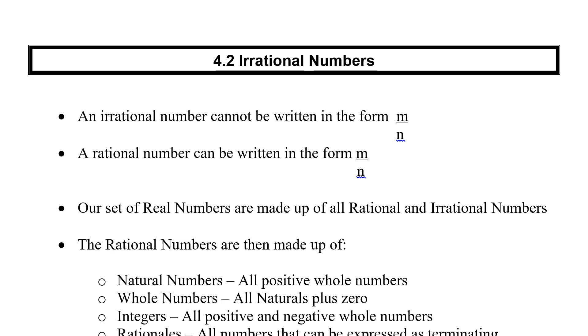So we want to make a difference here between an irrational number and a rational number. An irrational number is a number that cannot be written in the form m over n. Essentially, what we're saying cannot be written as a fraction. So this here represents a fraction.